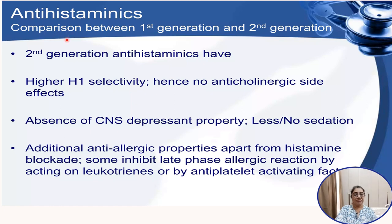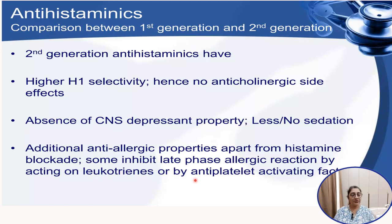Comparing first generation and second generation antihistaminics: second generation drugs have higher H1 selectivity and hence no anticholinergic effect. They have an absence of CNS depression property. Additionally, apart from histamine blockade, some second generation drugs inhibit the late phase of allergic reaction by acting on leukotrienes or through antiplatelet activity. They are less sedative and act on histamine, leukotrienes, and antiplatelet activating factor, making second generation antihistaminics more beneficial.